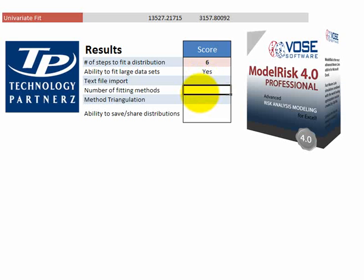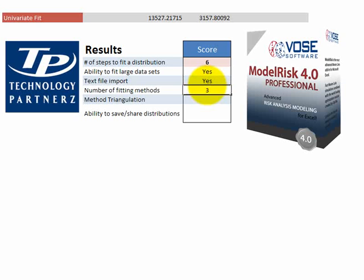Number of fitting methods: we have three — the Schwartz Information Criterion, the Akaike Information Criterion, and the Hanan-Quinn Information Criterion. More modern, a little more math intensive, but as we could see on the large dataset, that worked pretty well — so yes for that. Method triangulation is also there, though we didn't play with it. It could be color-coded to show which fits are best — that would be nice. As for the ability to save and share distributions, they have a library tool, but it doesn't seem to save the parameters of distributions, so that's a no.